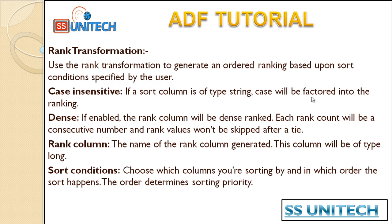Next we can see the dense rank option and the rank column. In case of dense rank, if you enable it by clicking the checkbox, the rank column will be a dense rank where each rank count will be a consecutive number and rank values will not be skipped. In case of the regular rank column, it will generate the rank value and the column will be of type long.